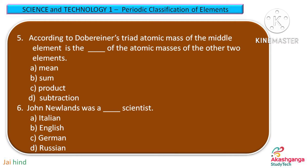Question 5. According to Dobereiner's Triad, the atomic mass of the middle element is the … of the atomic masses of the other two elements. Option A: mean, Option B: sum, Option C: product, and Option D: subtraction.